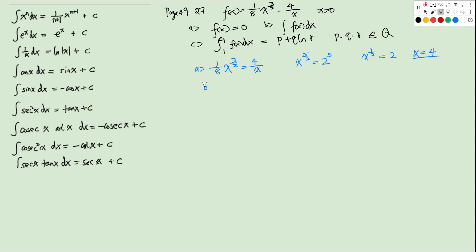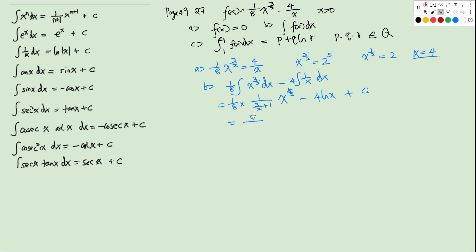For part B, we integrate f(x). We split into two parts: the integral of (1/8)x^(3/2) dx minus 4 times the integral of 1/x dx. For the first term, using the power rule with n = 3/2, we get (1/8) · (1/(5/2)) · x^(5/2) = (1/20)x^(5/2). For the second term, since x > 0 we get −4ln x. So the result is (1/20)x^(5/2) − 4ln x + C.